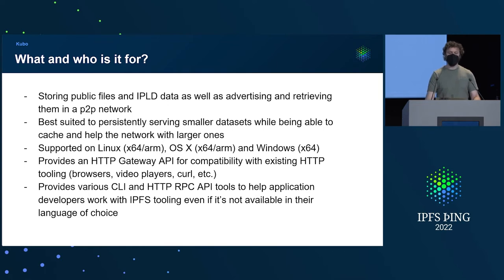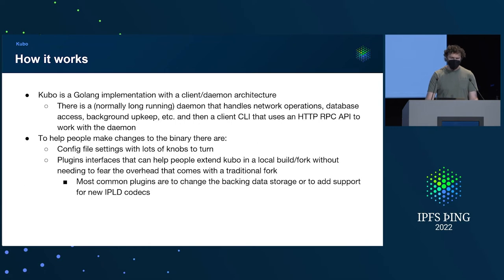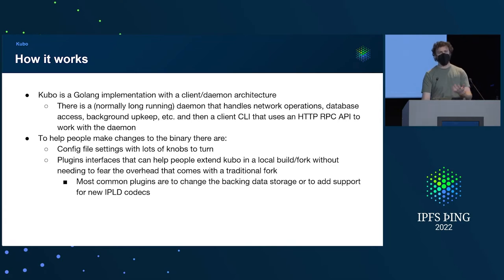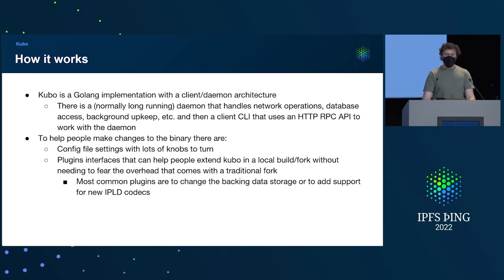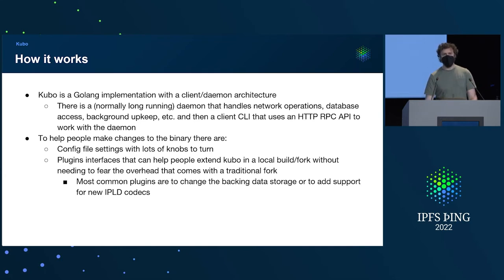We have CLI API and HTTP APIs to help people use that tooling. Internally, Kubo has this client-daemon architecture — there's a long-running process, and then you issue commands that are effectively HTTP commands against that process to do your work. It has trade-offs: this long-running daemon gets to cache and keep all of your network connections and database connections, at the cost of having to keep this thing running.